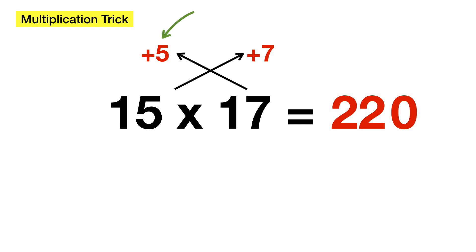The next part is to multiply these two differences, which is 5 and 7. So, 5 times 7 is 35. And now, we can safely do 220 plus 35.